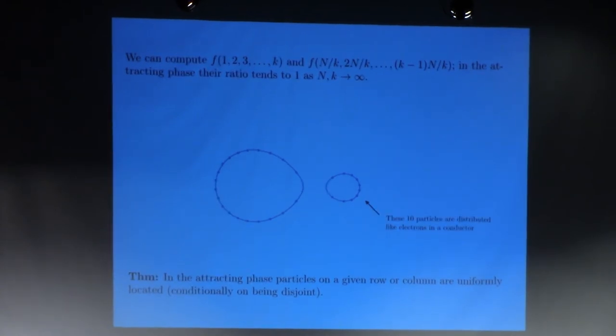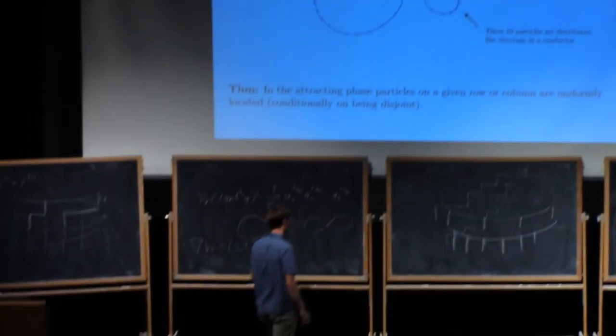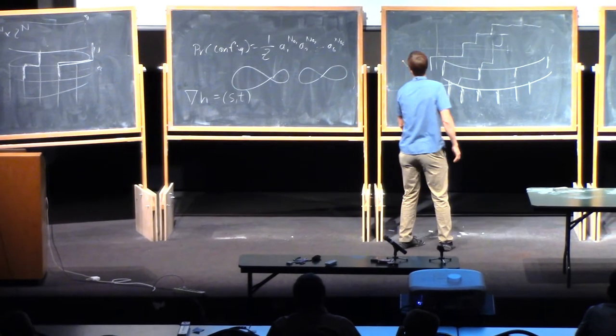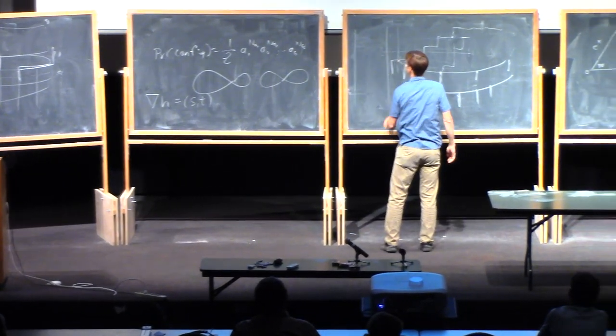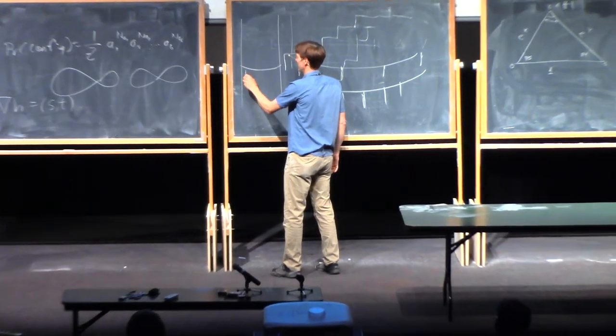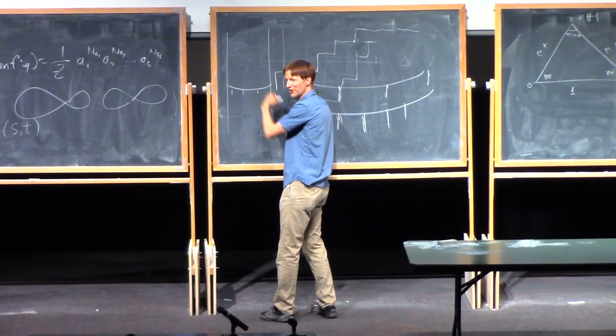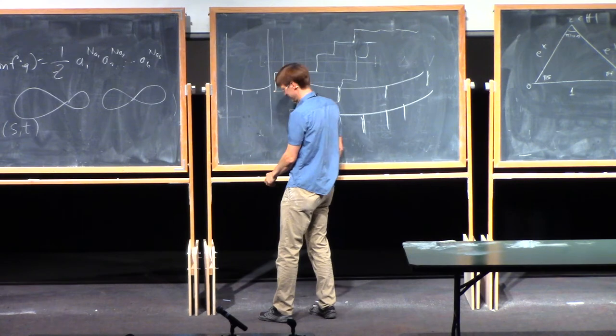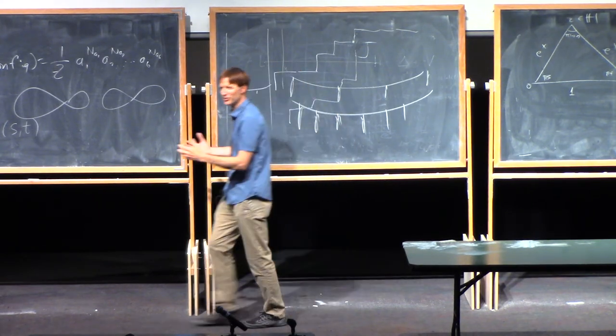And so that is the inescapable conclusion from this calculation. In the attracting phase, particles on a given row or column are exactly uniformly located. Except, of course, they have to be disjoint. Uniform located conditions on configurations below and above? No. No. I have an infinite, bi-infinite cylinder, and I look on a given row, and I've got k particles, then the locations of those k particles around the ring are uniform. Forget about everything. Yeah, just Bernoulli. Yeah.